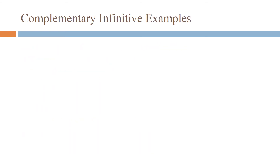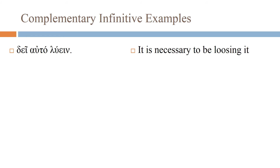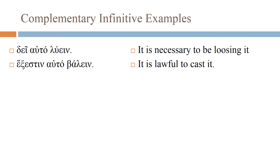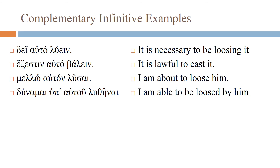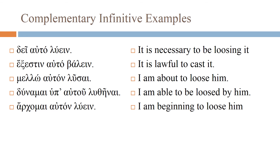Let's look at some complementary infinitive examples. Dei luein auto — 'it is necessary to be loosing it' (the infinitive can take an object). Exestin ballein auto — 'it is lawful to cast it.' Dunamai luthēnai hup' autou — 'I am able to be loosed by him.' Archomai auton luein — 'I am beginning to loose him.'